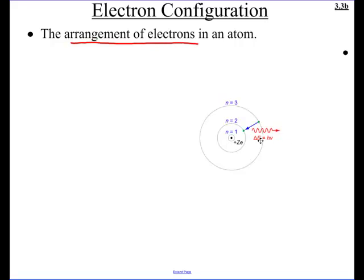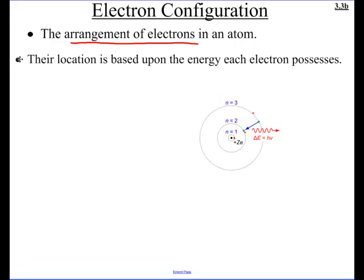If you remember our Bohr model, we've got energy level 1, energy level 2, energy level 3 — these circles get bigger and bigger further out. What dictates where the electrons go in the atom? The overriding principle is how much energy they have. Electrons with the lowest energy go into the lowest levels; as the energy increases, you go further out. The closer an electron is to the nucleus, the lower energy it possesses.